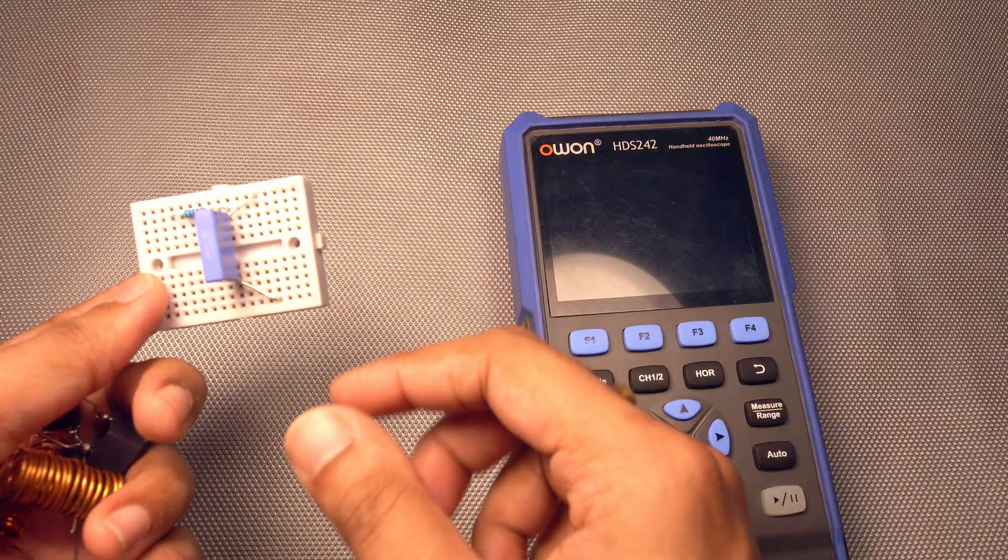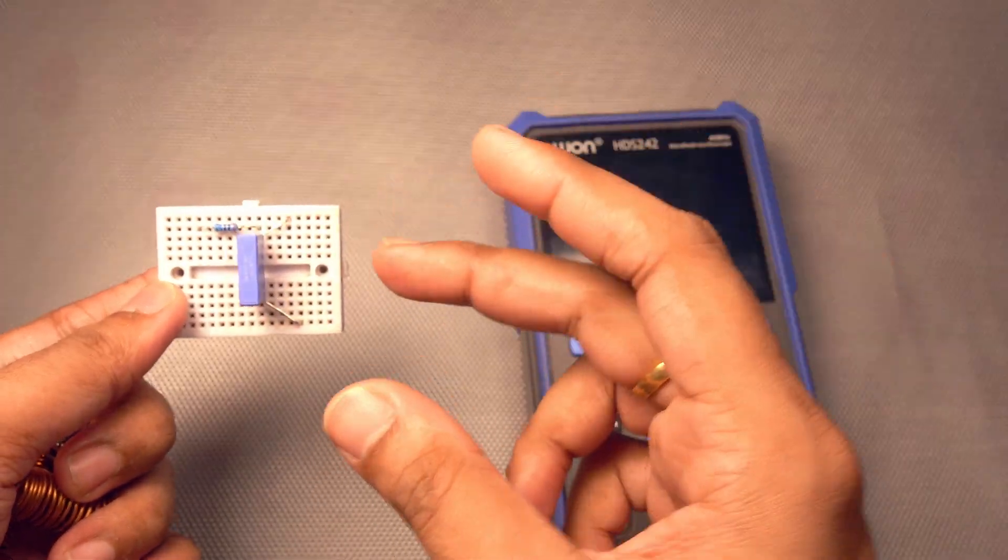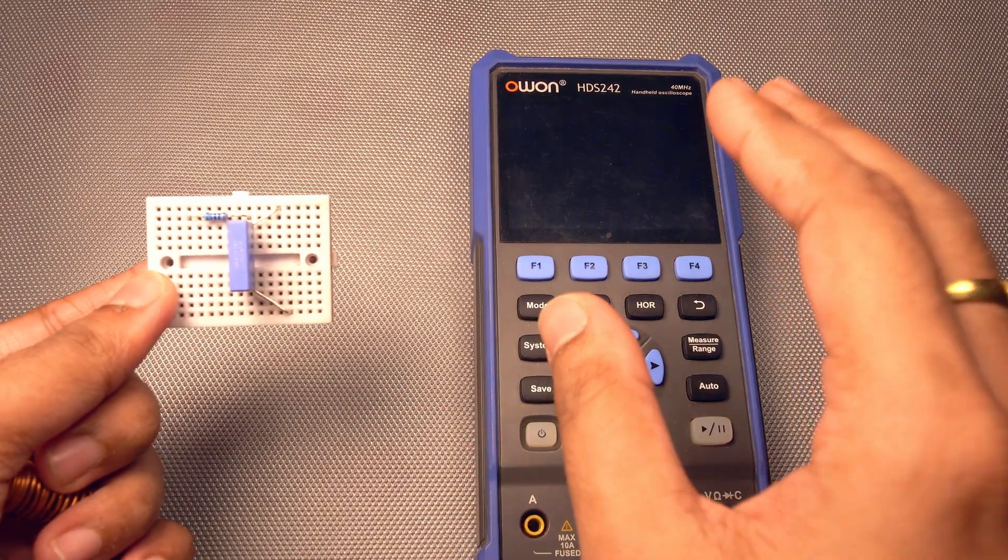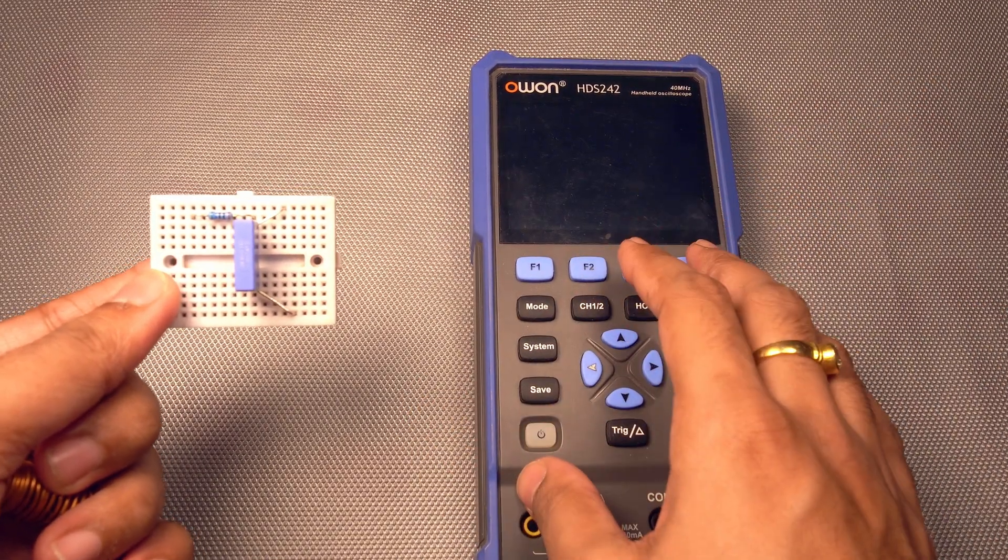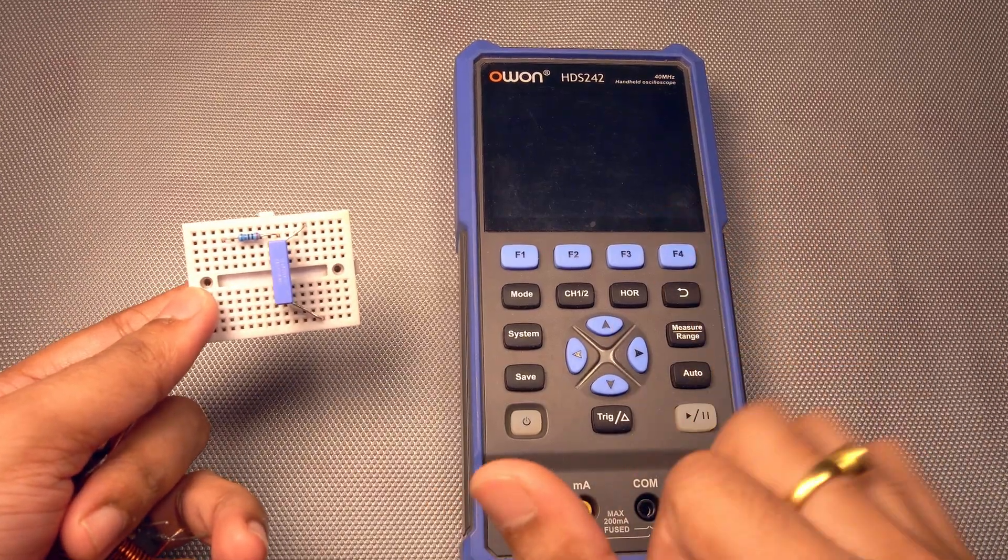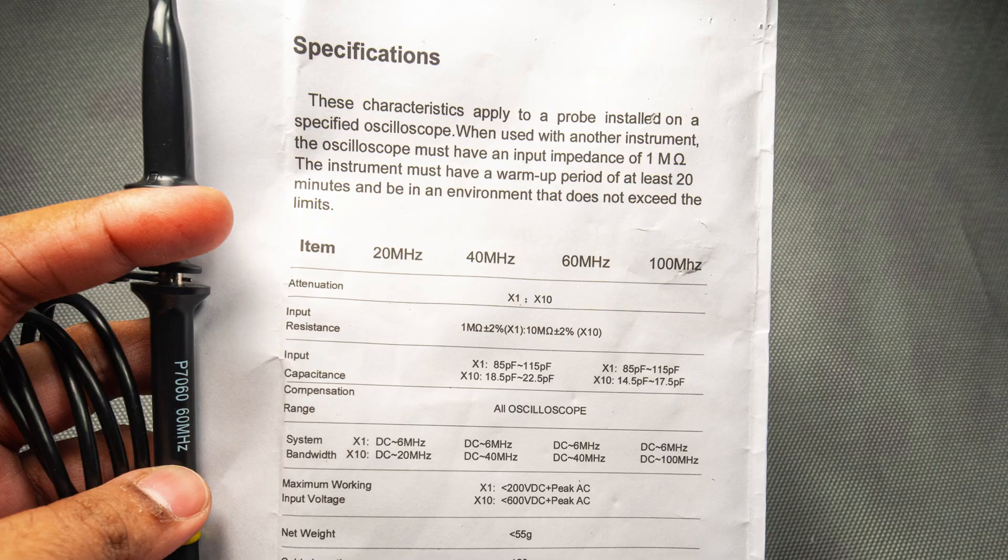And once we disconnect the power, it will try to oscillate and we have to capture that oscillating frequency with our oscilloscope. And there is a certain setting that we have to make in our oscilloscope to capture that sudden oscillation. So let me get ready with the setup and then we will test.